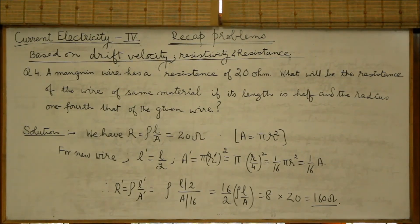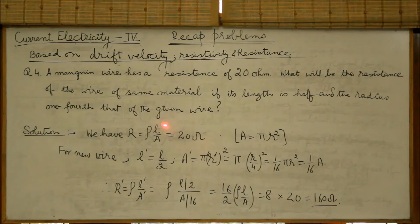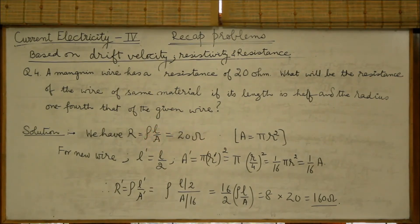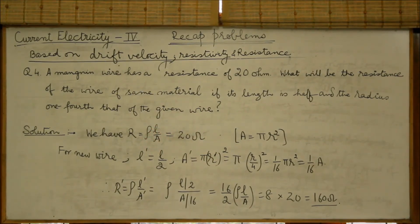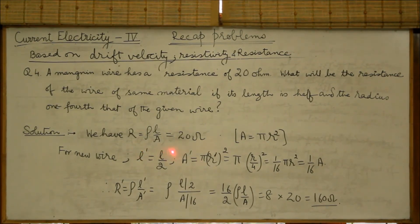Suppose L is length of the given wire and A is area of cross-section, R the radius of the given wire. So, we have R equals rho L by A equal to 20 ohms, where area is pi R square.